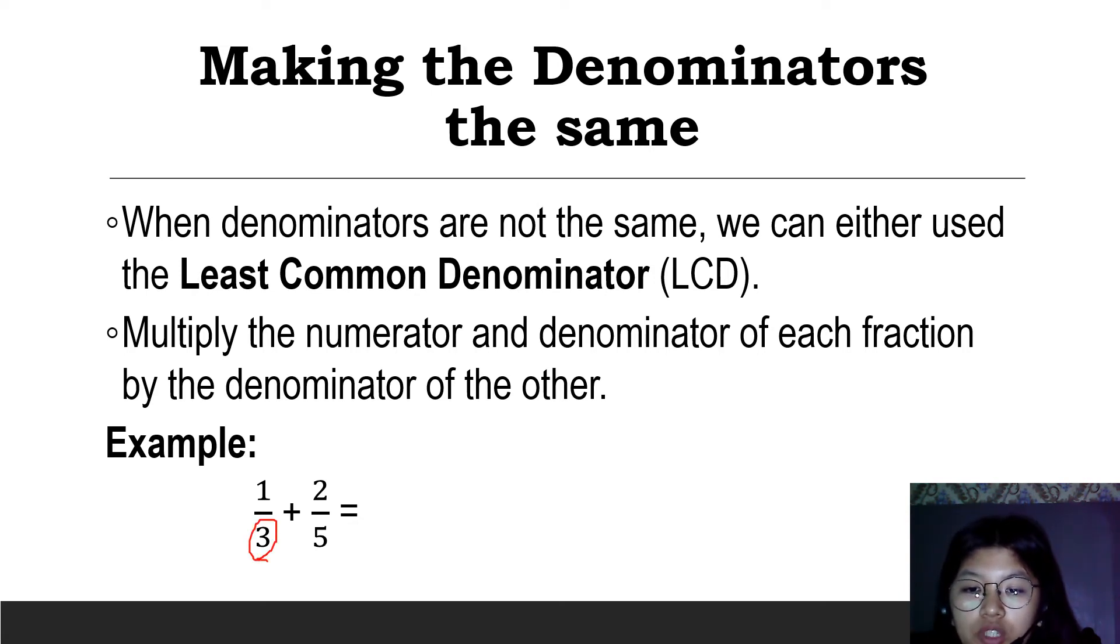3 and 5, when we multiply them by 1, 2, 3, 4, 5 and so on, the number where they match is our LCD. For example, with denominators 3 and 5: 3 times 1 is 3, 3 times 2 is 6, 3 times 3 is 9, 3 times 4 is 12, 3 times 5 is 15. And 5 times 1 is 5, 5 times 2 is 10, 5 times 3 is 15. So 15 is our LCD.